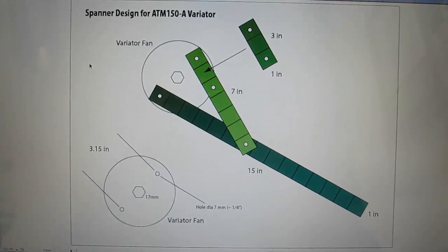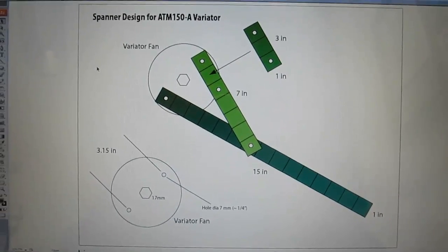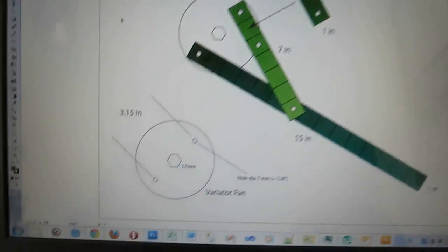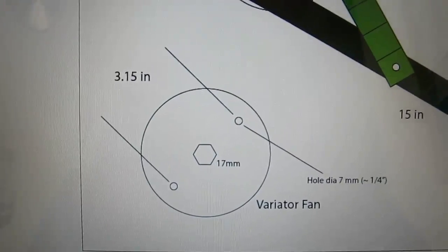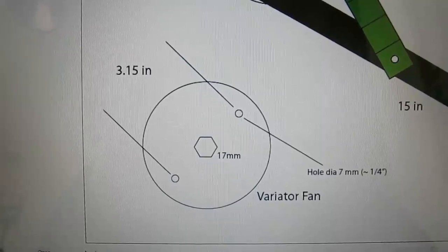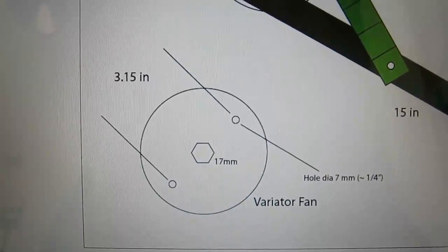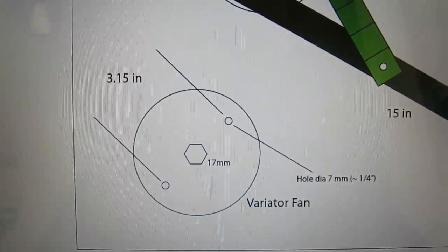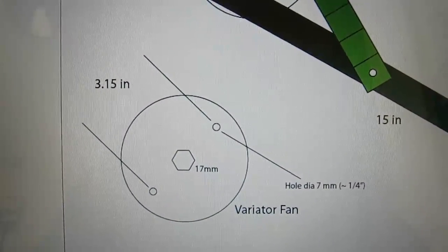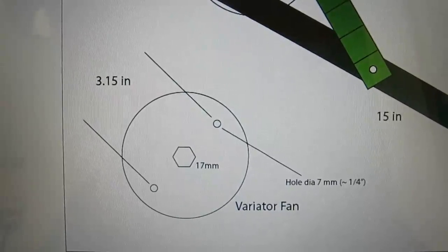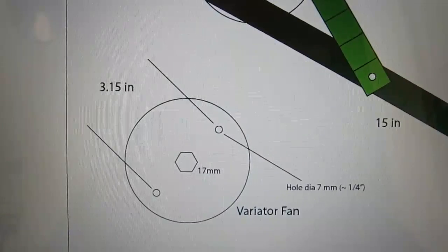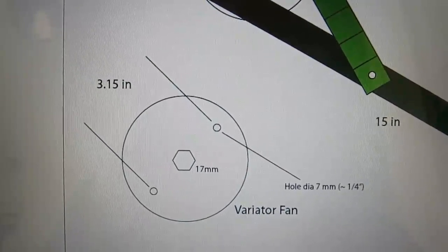So here's the variator spanner design and this is specifically for a Tao Tao ATM 150A Evo. The variator fan is, these are the dimensions here, between the two holes where you need to insert your spanner. The distance is 3.15 inches. It's got a 17mm nut on the variator. The hole diameter that you're inserting into is approximately 7mm, a little bit less, so it's about a quarter of an inch.